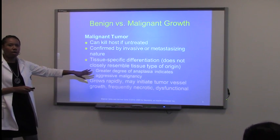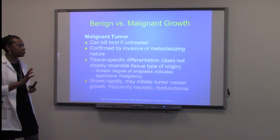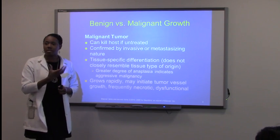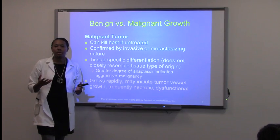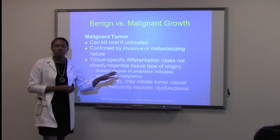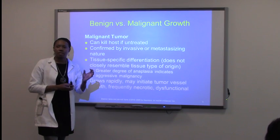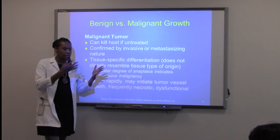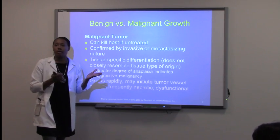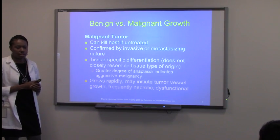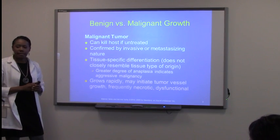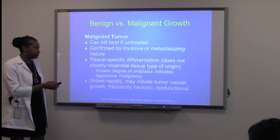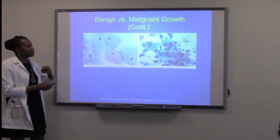Malignant tumors have tissue-specific differentiation, meaning they do not resemble their tissue of origin. You'll see an area of cells that you can't define exactly — it doesn't even look like the tissue type. Even looking at lung tissue, you can't tell what it is. That is one characteristic also listed in your table. Malignant tumors grow rapidly, again because of the vascular supply that is there.